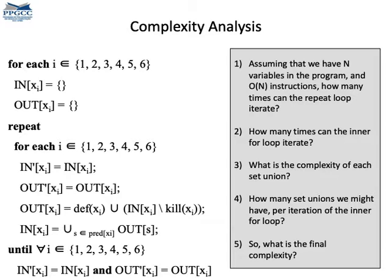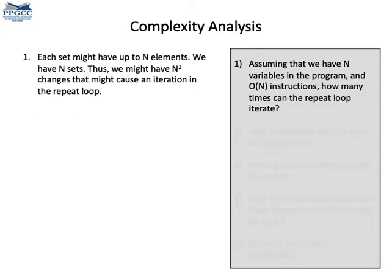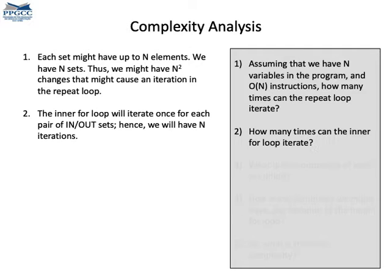Let's see. The repeat loop iterates whenever some IN or OUT set changes. If we have N variables and N instructions, then each set can have up to N variables, and we have N sets. Thus, in the worst case, they can change by adding one element into one set each time. That gives us N squared iterations. The inner for loop iterates once for each IN and OUT set. We have one of these for every instruction, so we have N iterations.